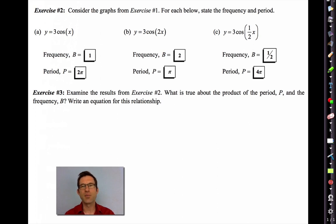Before we do the Desmos demo, let's summarize because there is a great relationship between the frequency B and the period P. I reproduced our results from the previous problem. It says, examine the results from exercise two. What is true about the product of the period P and the frequency B? Write an equation for this relationship. Think about this for a moment.